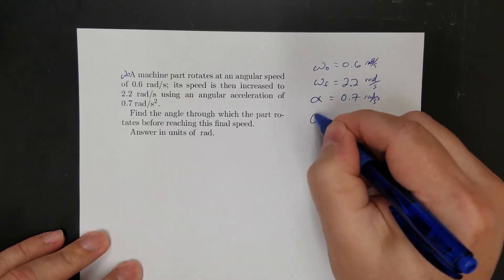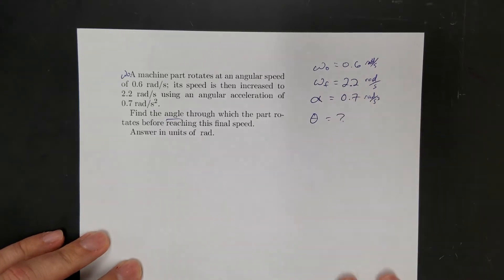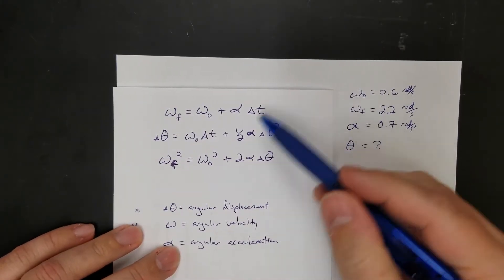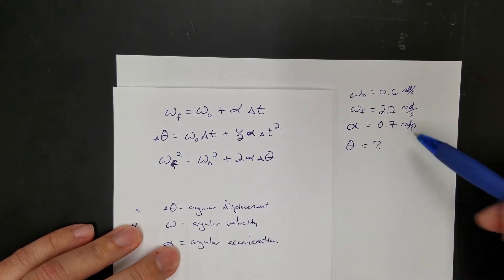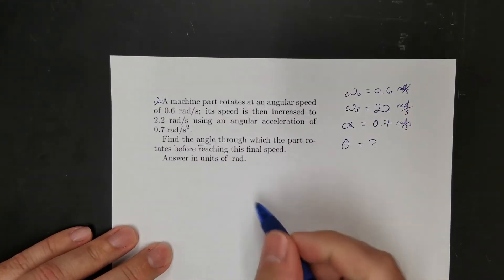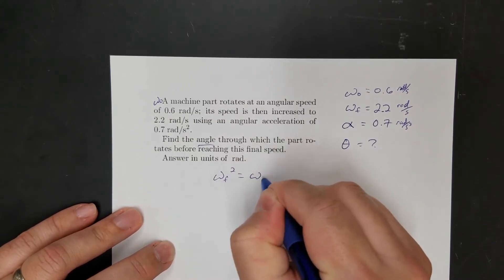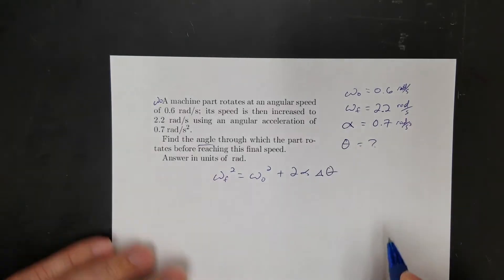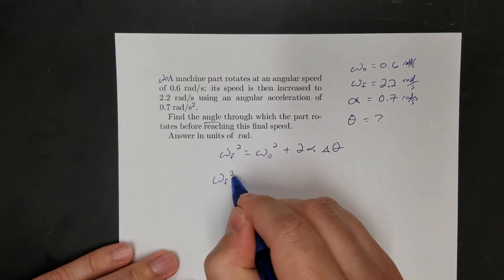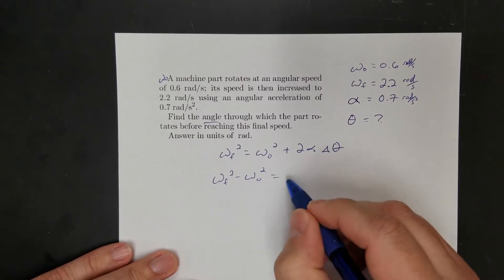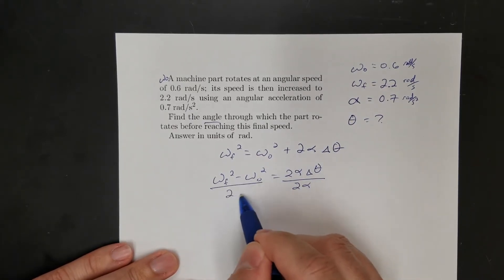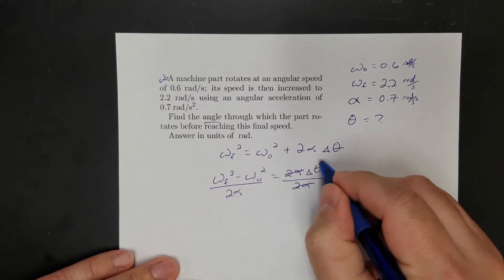Find the angle through which the part rotates before reaching final speed. The angle is theta. What equation has all those things in it? I don't have time, so I need the equation without time: final squared equals initial squared plus 2 alpha delta theta. I want to solve for delta theta, so I subtract initial squared over: final squared minus initial squared equals 2 alpha delta theta, then divide by 2 times alpha to get delta theta.